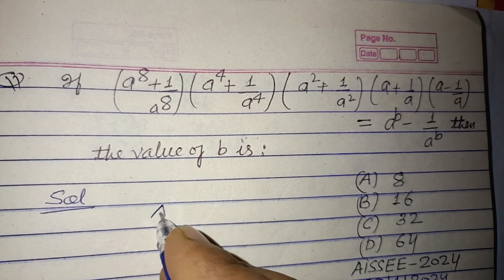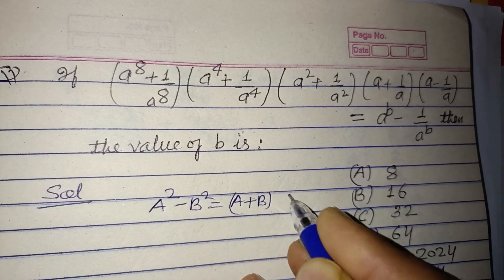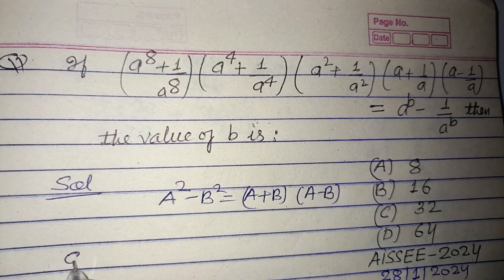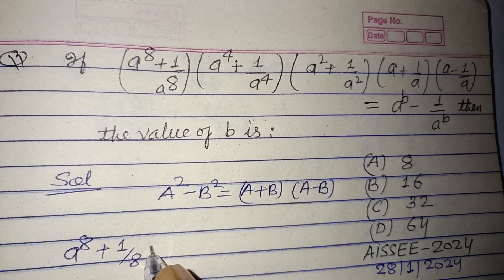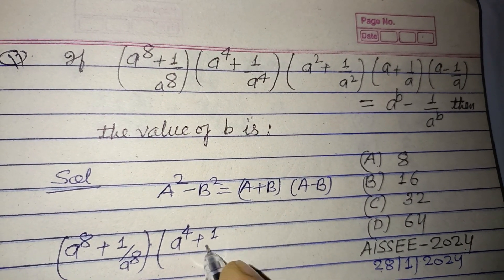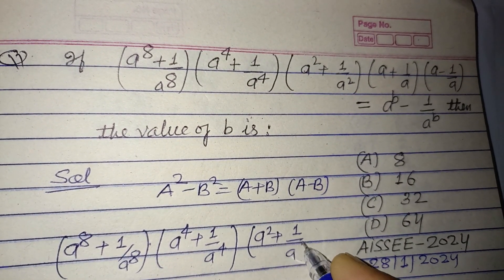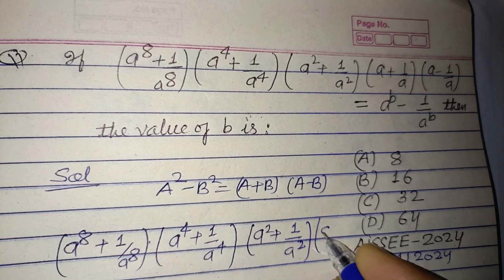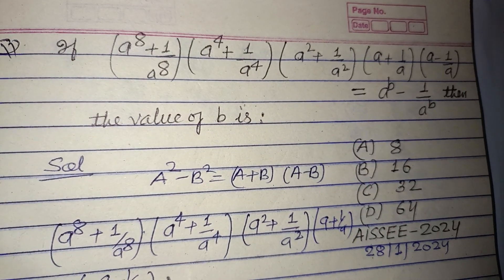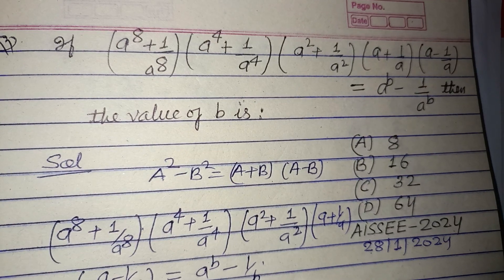Students, we use the identity a² - b² = (a + b)(a - b) in this question. We have (a^8 + 1/a^8) × (a^4 + 1/a^4) × (a² + 1/a²) × (a + 1/a) × (a - 1/a) equal to a^b - 1/a^b.